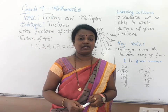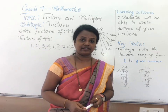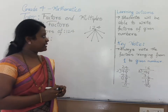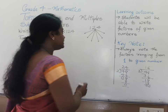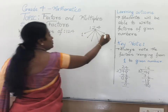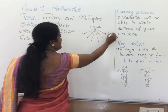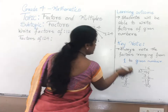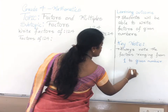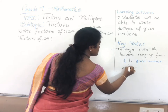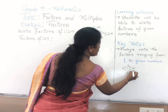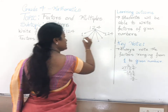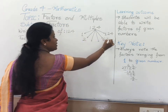Let us check with a 3-digit number. How to find factors of a 3-digit number? Let us find factors of 124. We start with 1: 1 124s are 124. Can we divide 124 by 2? Yes. 2 62s are 124.